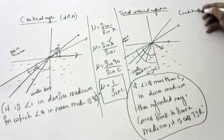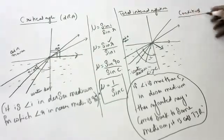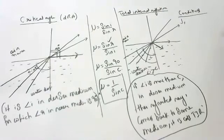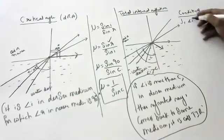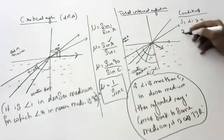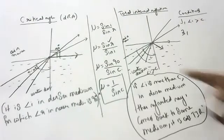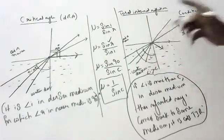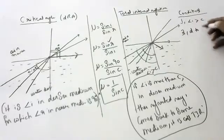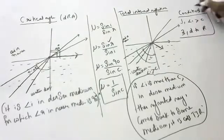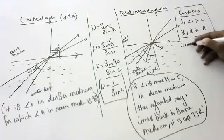What are the conditions for total internal reflection to occur? First: the angle of incidence should be more than the critical angle. Second: light must always pass from denser to rare medium. These are the two conditions.